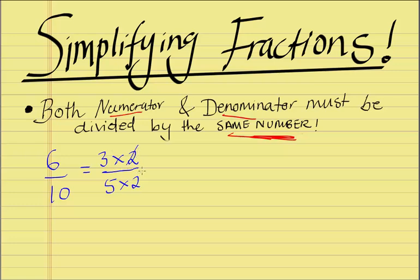And what we can do is we can cancel out the 2's. 2 divided into 2 cancels out, and what we're left with is 3 on 5. 3 fifths is our simplified fraction of 6 on 10.